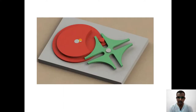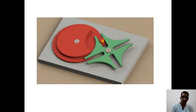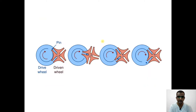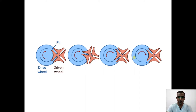Here is a 3D printed Geneva mechanism for more clarity. O1 is the driver center, O2 is the driven center, and there are four slots. For 360 degrees of rotation of the driver, the driven member rotates by only 90 degrees. We can observe the process: the pin enters a slot, rotates the driven member, disengages, and then the locking plate locks the driven member for the remaining 270 degrees.